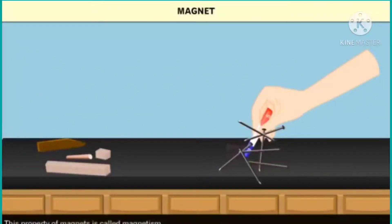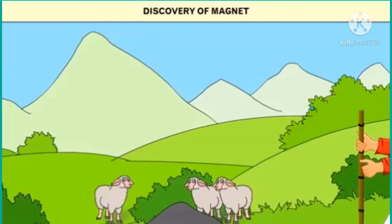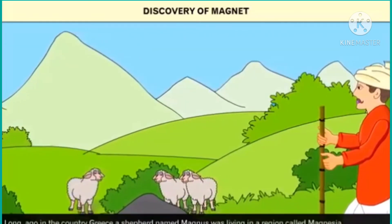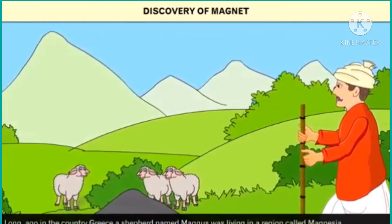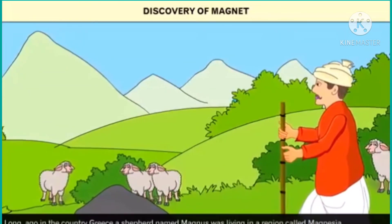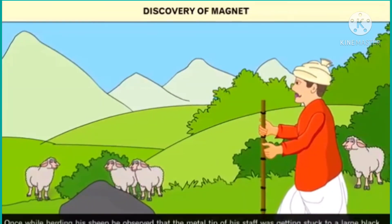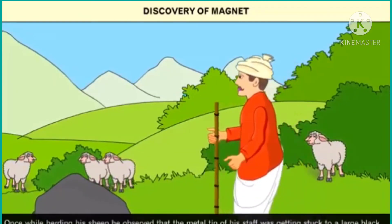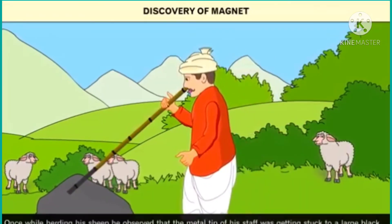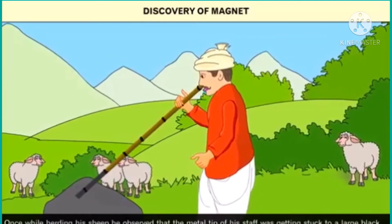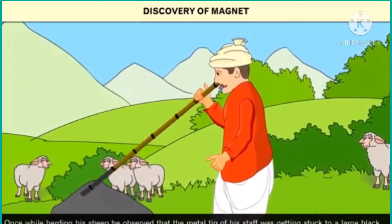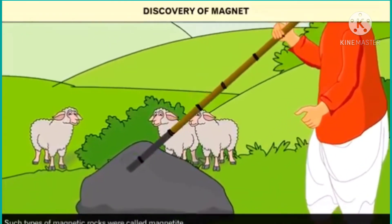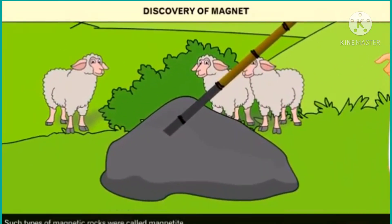This property of magnets is called magnetism. Discovery of magnets: Long ago in the country Greece, a shepherd named Magnus was living in a region called Magnesia. Once, while herding his sheep, he observed that the metal tip of his staff was getting stuck to a large black rock. The rock was a natural magnet and the stick was attracted to it. Such types of magnetic rocks were called magnetite.